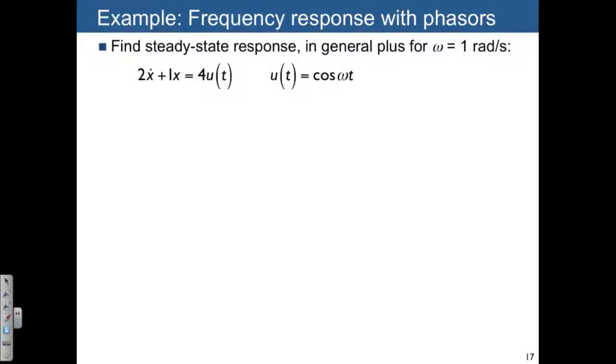Here's an example of solving for the sinusoidal response using phasors. For the system 2ẋ + x = 4u(t), where we're applying a sinusoidal input, we'll do this generally for any ω, and then we'll also deal with a special case of ω = 1.